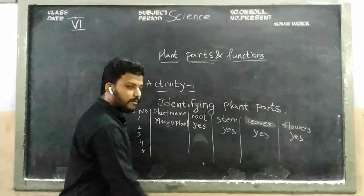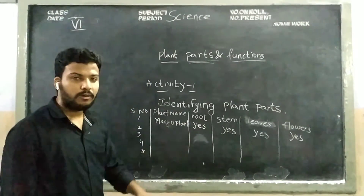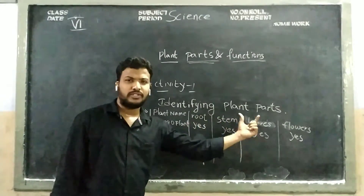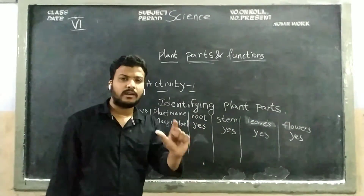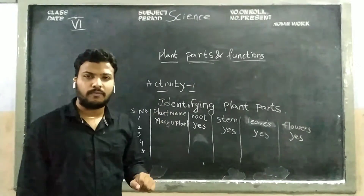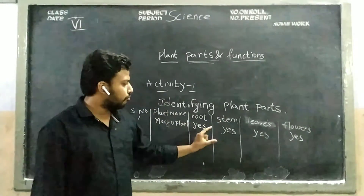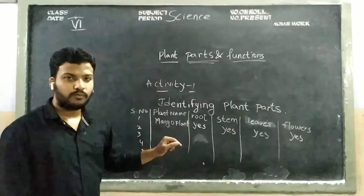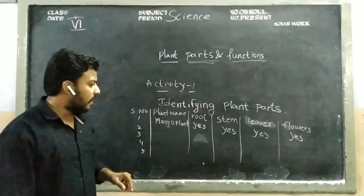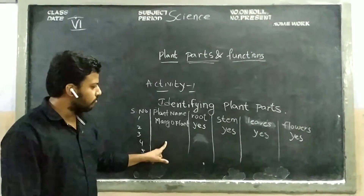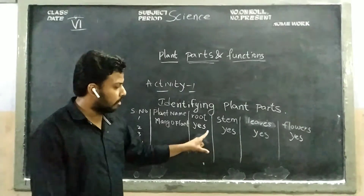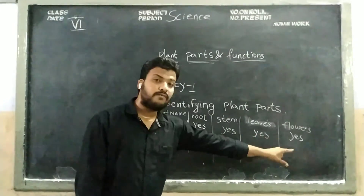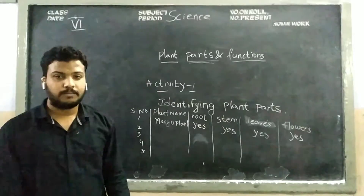Try to write the names for five plants. Identify the plant parts — just collect five different kinds of plants and write roots, stems, leaves, and flowers section-wise. Write the plant name and whether it contains root or not, stem or not, leaves or not, or flowers or not.